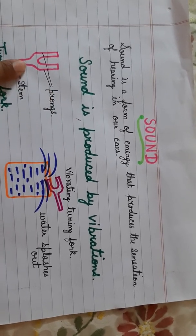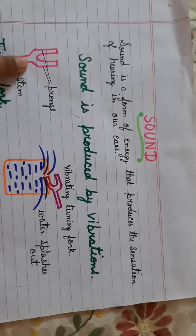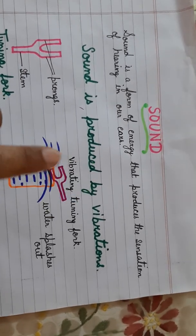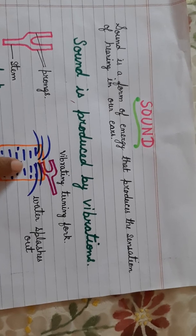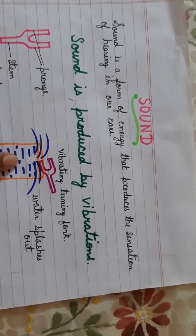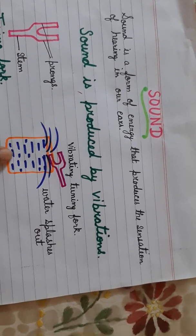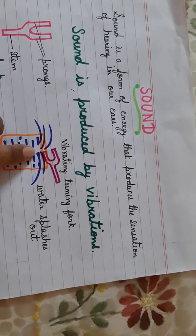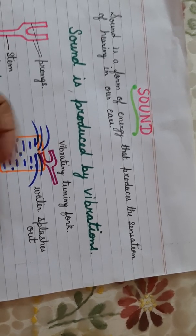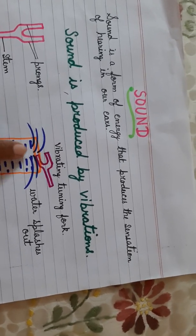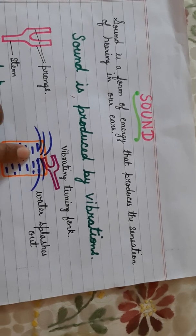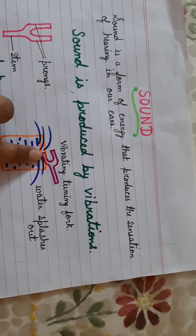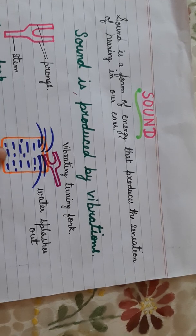So for that, what we do is we vibrate the tuning fork and we touch the prongs with a surface of water which is filled in a beaker. And when the vibrating prongs touch the surface of the water, we see that the water splashes out. From this, we come to know that the prongs were vibrating and due to the vibration of the prongs, we could hear a sound.